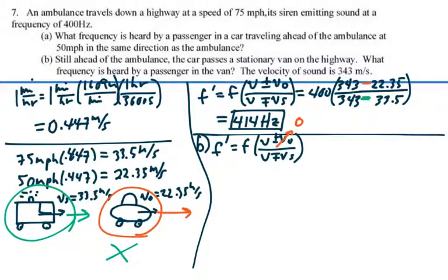This is going to be 400 times 343 plus or minus 0 over 343. Now, it's still the intent of the source to move toward the observer, so we're going to use the minus sign here again for the top minus sign. So this equals 443.3 hertz.